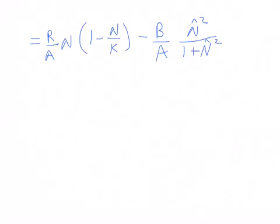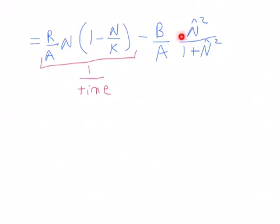Checking units: r has units one over time, a has units number of budworms, and n has units number of budworms, so the budworms cancel and that whole term is just one over time. The fraction has no units. Then b is budworms per unit time divided by a which is budworms, so b/a also has units of one over time. We just need to get rid of those time units.